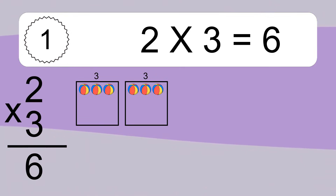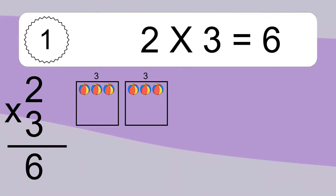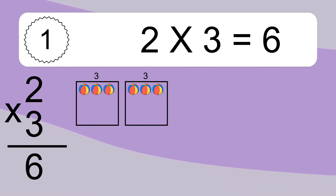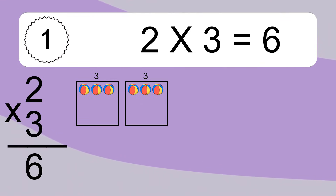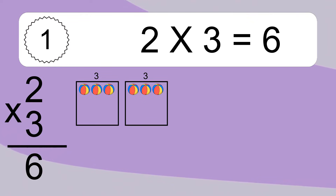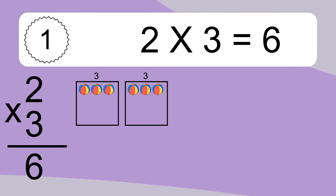We have 2 boxes, and each box has 3 colorful balls inside. If you count all the balls in all the boxes together, you will have 2 times 3 balls. This equals 6 balls.